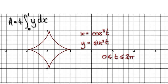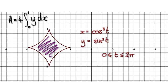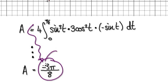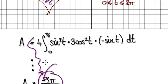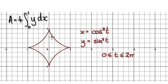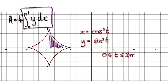Following on from the previous two videos, we were trying to find out this area here, and as we were doing it, it gave us a negative area. So just a recap of what we did in the previous video: we were trying to find out this whole area here. But rather than finding the whole area, we would just concentrate on finding this area. Once we've got this area, we can then multiply it by 4, and that would give us the whole area.